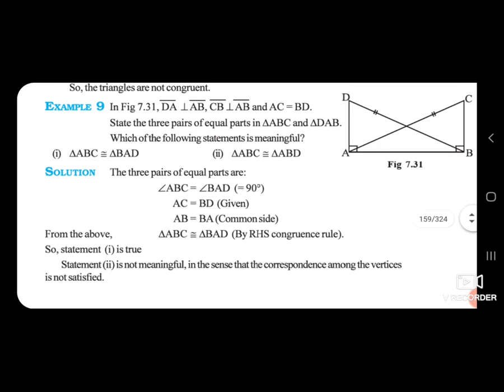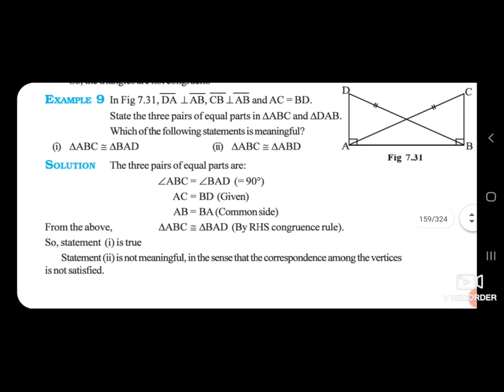Yahan pe dusre triangle mein liya hai A, B, C aur A, B, D — yeh nahi ho sakta. So statement 2 is not meaningful, in the sense that the correspondence among the vertices is not satisfied.